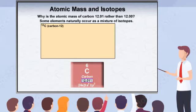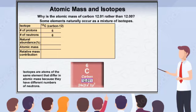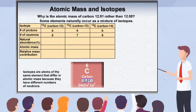Some elements naturally occur as a mixture of isotopes, which are atoms of the same element that have a different number of neutrons, and therefore a different atomic mass. For example, most carbon atoms have six protons and six neutrons. This form of carbon is known as carbon-12, because the six protons and six neutrons add up to 12. However, some carbon isotopes have six protons and seven neutrons, and are therefore known as carbon-13.